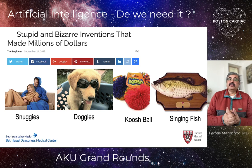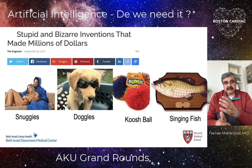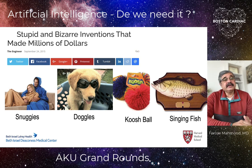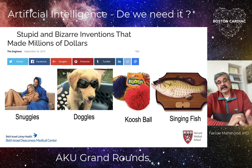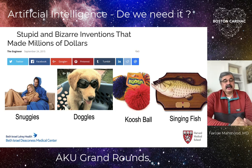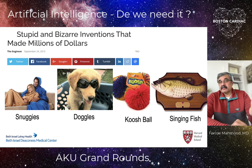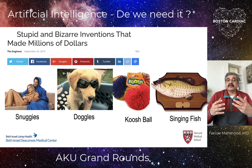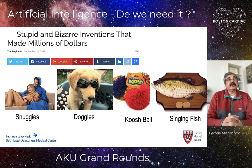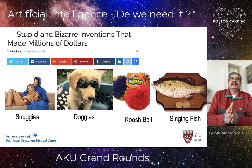However, the amount of money being poured into AI is not evidence of its legitimacy. There's a list of bizarre inventions that have made millions of dollars — Snuggies, doggles (goggles for your dogs), koosh balls, and singing fish — each incredibly silly invention was commercialized and provided its creator with over 100 million dollars. Just because people are pouring a lot of money into something does not mean it is the right thing to do or that it will sustain itself over time.